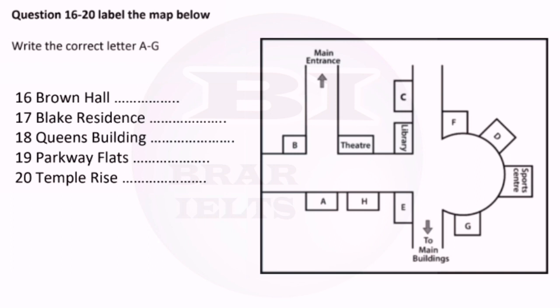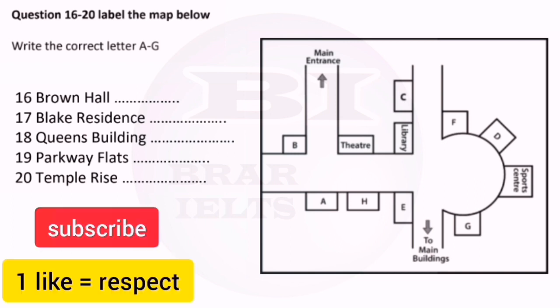Now, the Parkway Flats are on the opposite corner to the library, facing the circle, as you head towards the main buildings. The main buildings are only about a five-minute walk from here, and places in these halls go quickly. So, my advice is to reserve your place as soon as possible. Then, Temple Rise is inside the circle, next to the sports centre, but further from the main university buildings. Now, if you'd like to go off and physically look...